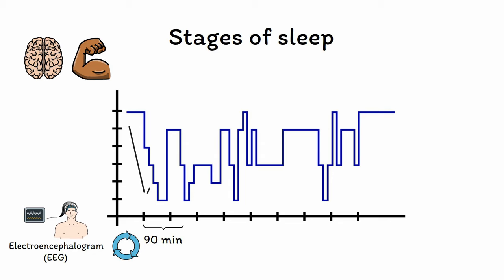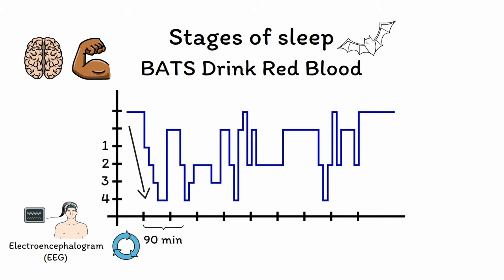A sleep cycle proceeds in a regular order from lighter stages of sleep — stages 1 and 2 — down towards deeper phases of sleep — stages 3 and 4 — which are associated with slower and less frequent activity on EEG. The findings seen in each stage of the sleep cycle, as well as the order they occur in, can be memorized using the mnemonic BATS DRINK RED BLOOD.